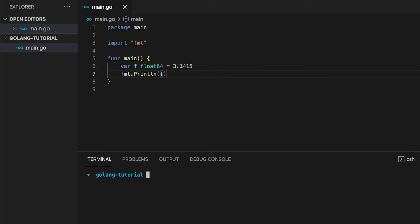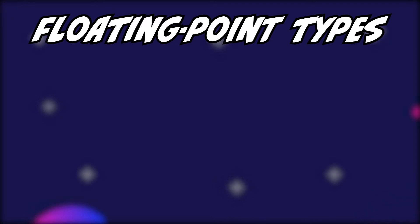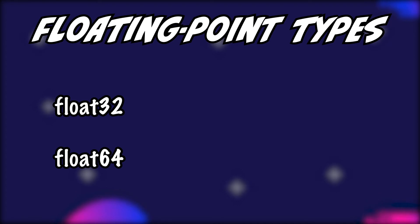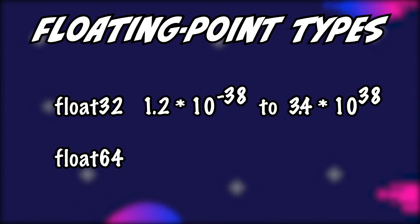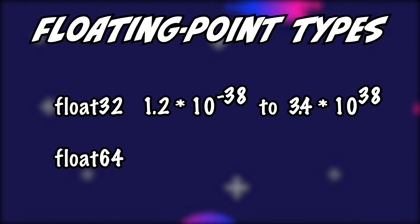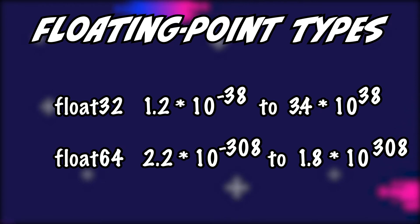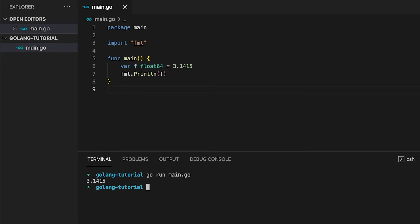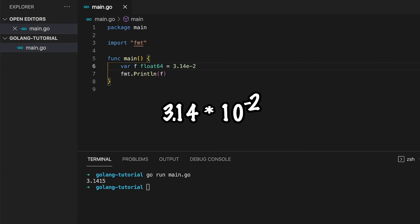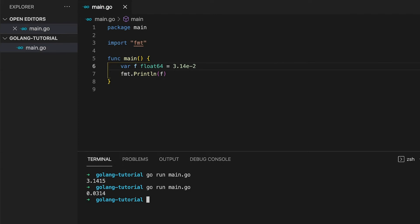Up next we have the floating point numbers. If you want to store any kind of decimal number, like 3.1415, you need a floating point variable type. In Go, they come in the flavor of float32 or float64 — basically different sizes of values they can store. Float32 ranges from 1.2×10⁻³⁸ up to 3.4×10³⁸. If you need more precision, you can use float64, which ranges from 2.2×10⁻³⁰⁸ up to 1.8×10³⁰⁸. Floating point numbers can be declared using point notation like 3.1415, or scientific notation using the letter E — for example, 3.14E-2 means 3.14×10⁻², giving you 0.0314.